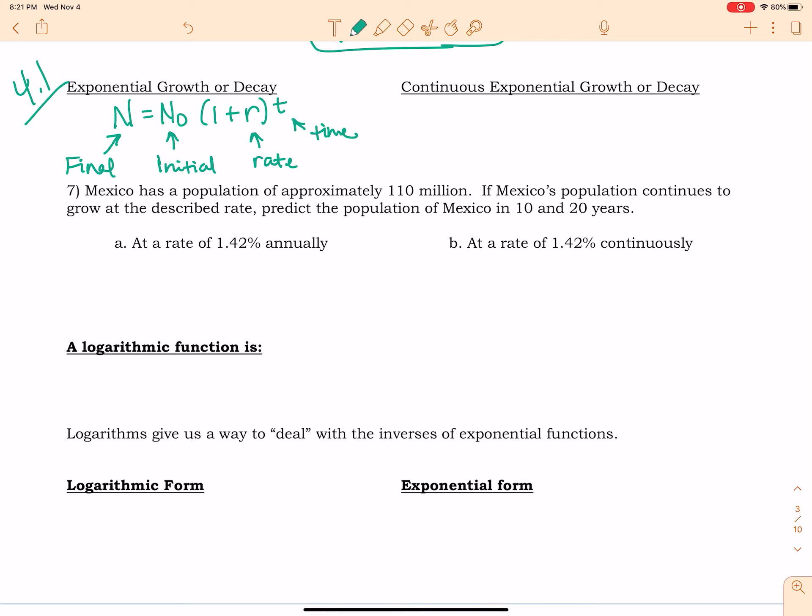Alright, for continuous exponential growth or decay, you are going to use this formula where N sub zero is still the initial amount. And now we've got E to the KT, and the K now is the rate.